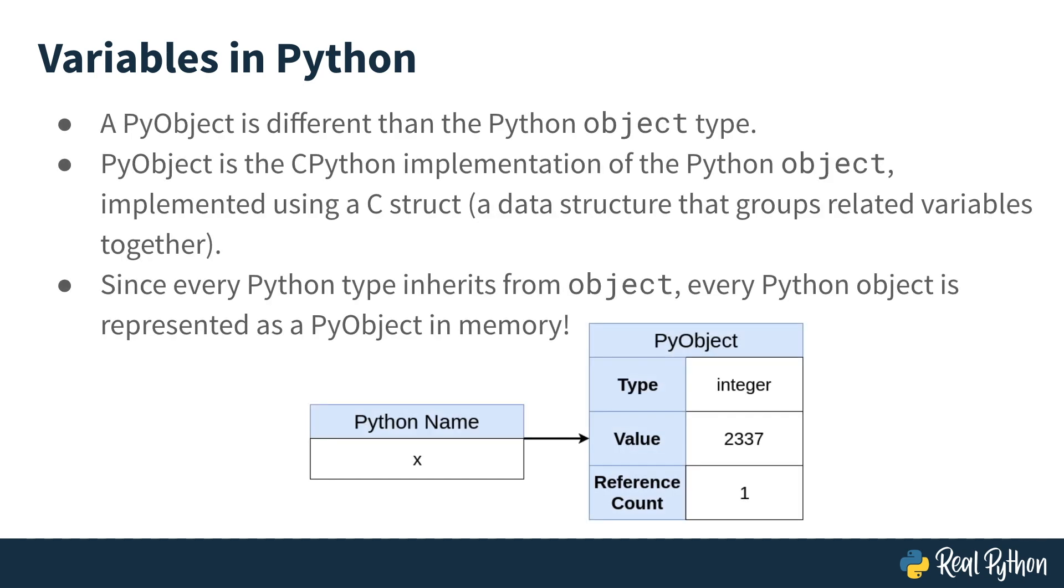I should also mention that this PyObject is different from the Python object type. A PyObject is the CPython implementation of the Python object that's actually implemented using a C struct. But because every type in Python inherits from object, then every type ends up mapping to a PyObject under the hood.